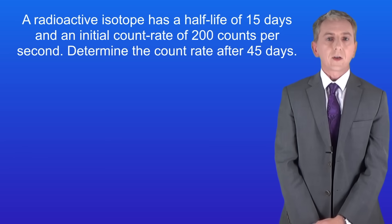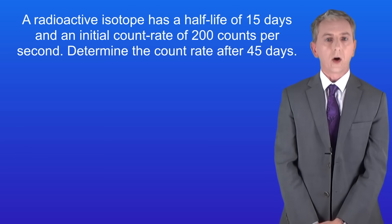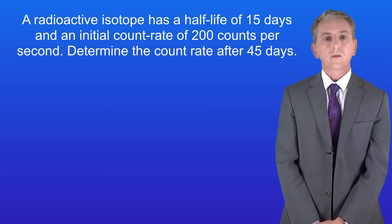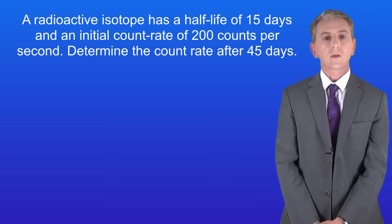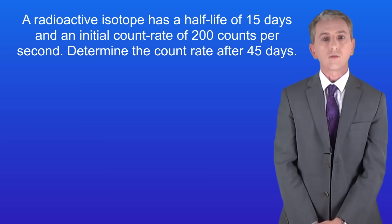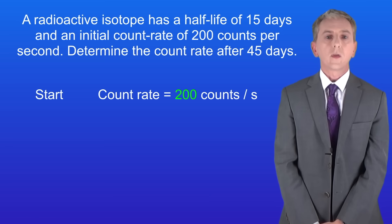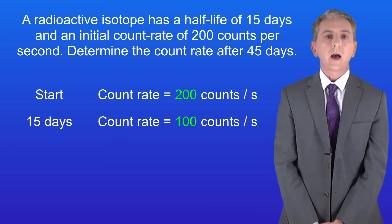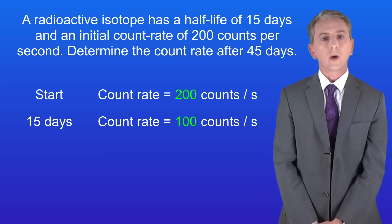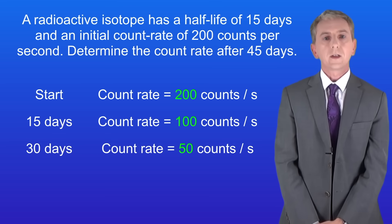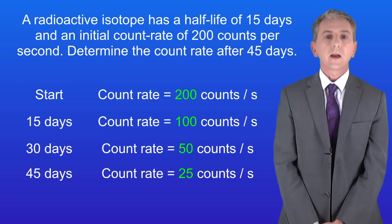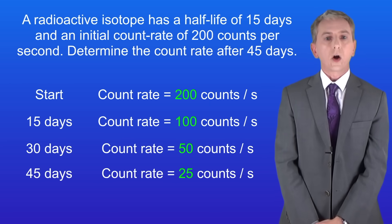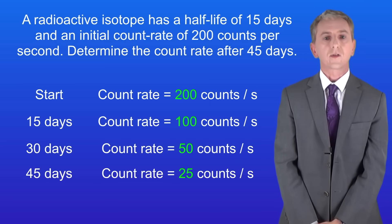Now remember that after each half-life the count rate will have halved. The half-life is 15 days so 45 days is three half-lives. That means the count rate will have halved three times. So the initial count rate is 200 counts per second. After 15 days it will have halved to 100. Fifteen days after that it will have halved again to 50. And finally 15 days later it will have halved again to 25 counts per second.